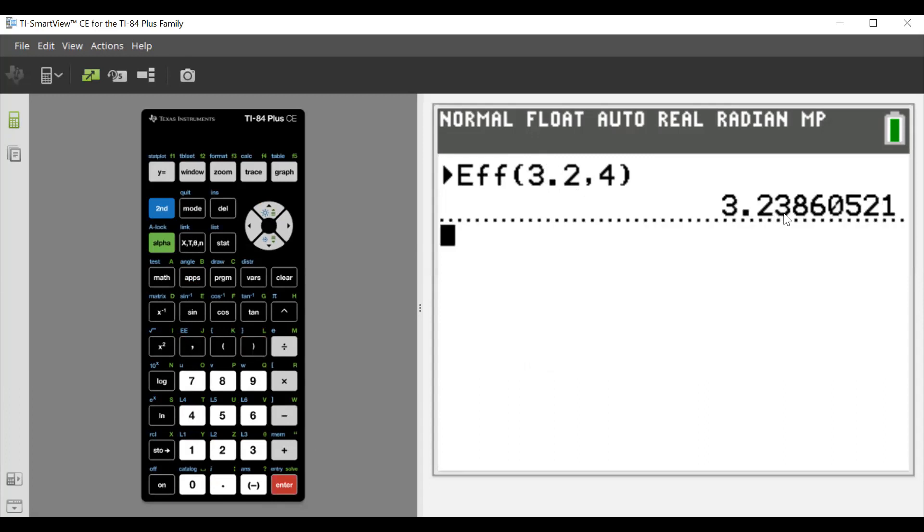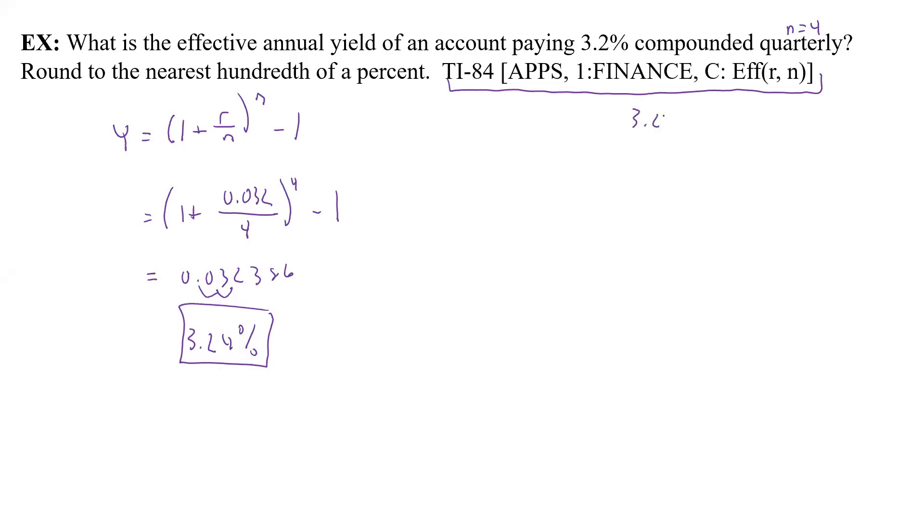And it gives us 3.24 automatically. We didn't even have to do anything else. It was already there. So this one gave us 3.24%, and we didn't have to remember that equation. But we had to know how to use our calculator, or we also had to have the TI-84. This is the one that's going to be used for most things. This one is if you're special and you have the 84, and you remember how to use your calculator, you can do that one. Hopefully that will help you through this section of the book.